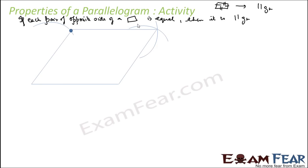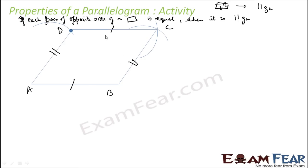Join these points. This length equals this length because that's how we constructed it — we took length AB and drew the same arc from both ends. If you say this is quadrilateral ABCD, then AB equals CD and AD equals BC by construction. Now observe: AB is parallel to CD and AD is parallel to BC, so it is a parallelogram.